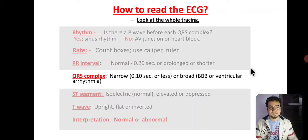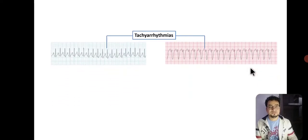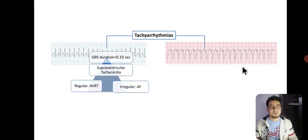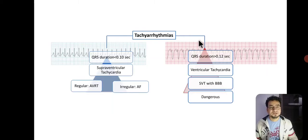Let's start with the QRS complex. The QRS complex is a very important part of ECG. Its duration is very important to classify tachyarrhythmia into two categories: narrow complex tachycardia, in which the QRS is narrower than 0.12 second, and broad complex tachycardia, in which the QRS duration is more than 0.12 second.